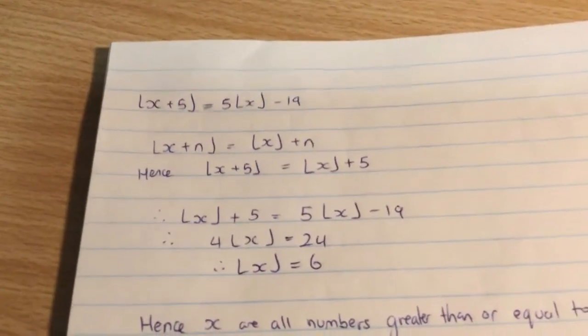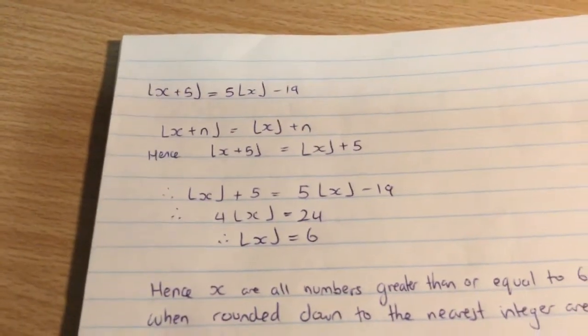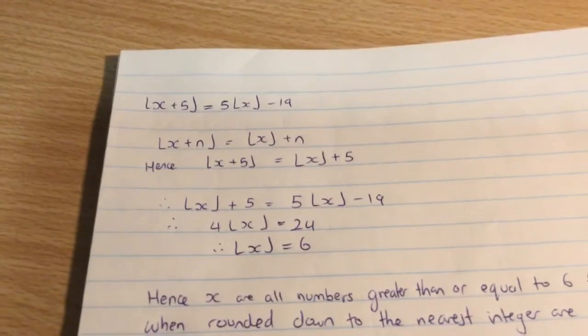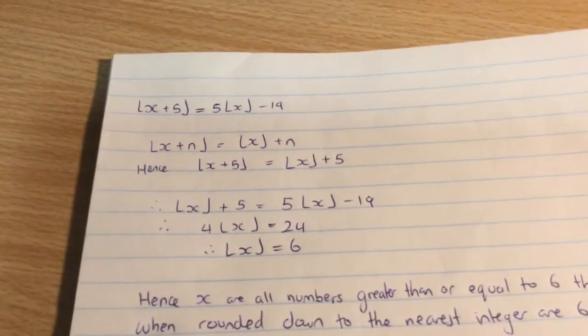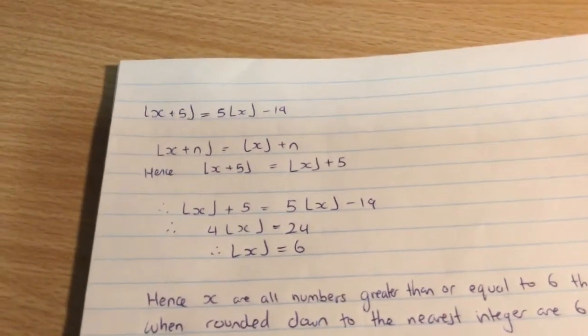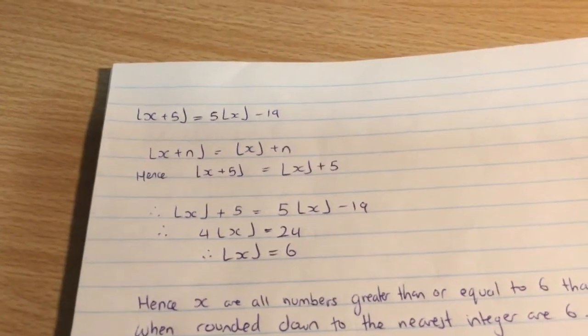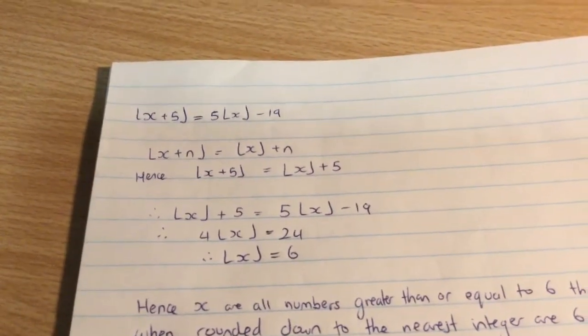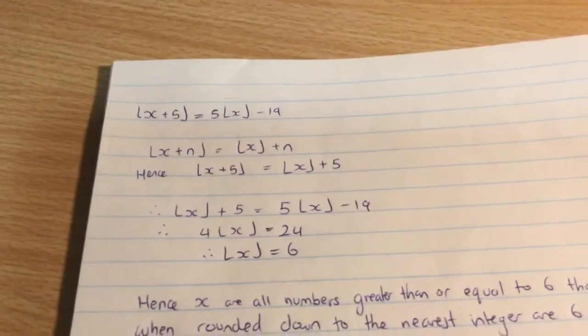So when we use this we apply that to the left hand side and we find that floor of x then plus 5 is equal to 5 times floor of x then minus 19. So what we do is rearrange, bring the other floor of x to the other side and we take the 19 to the other side and we find that 4 times floor of x is equal to 24.